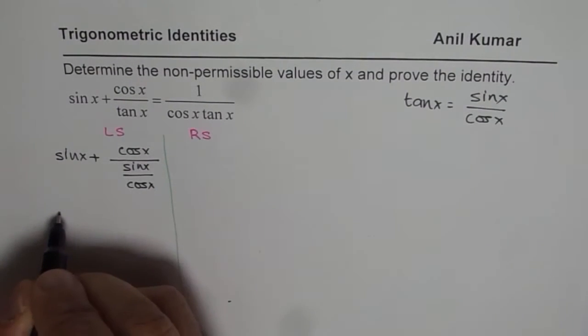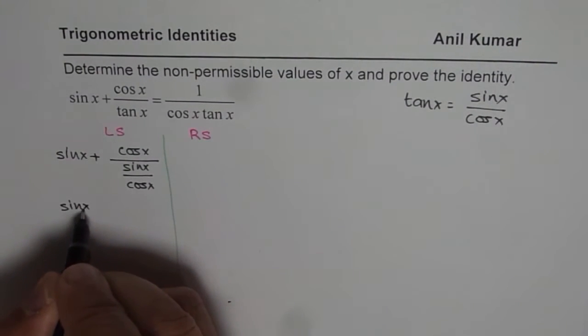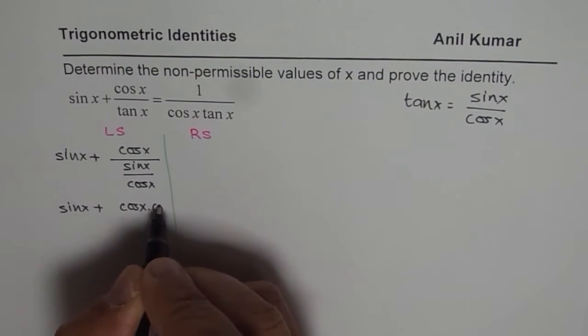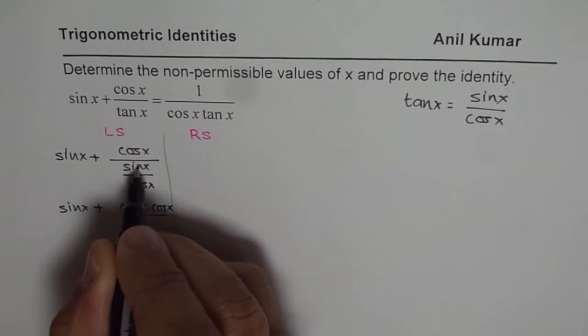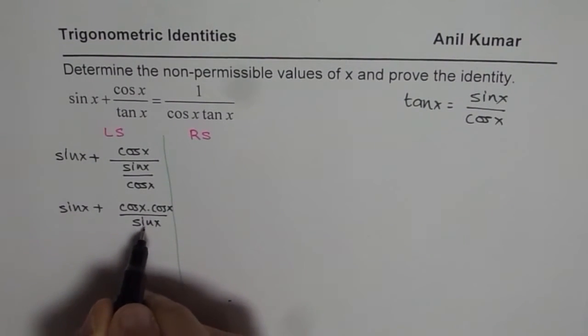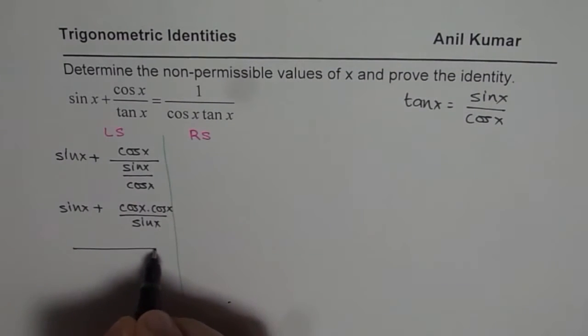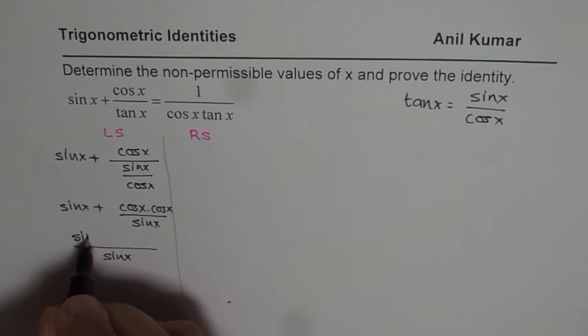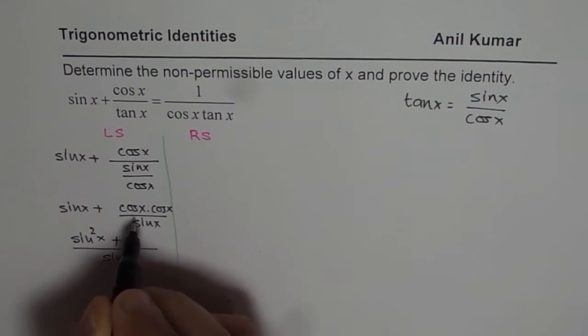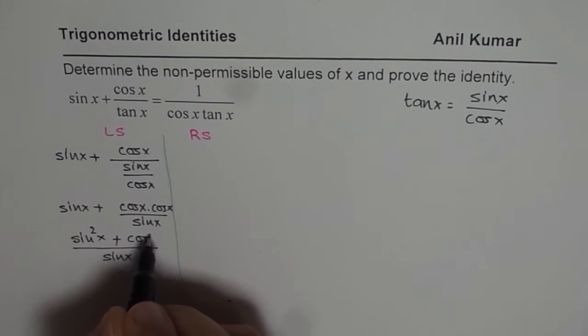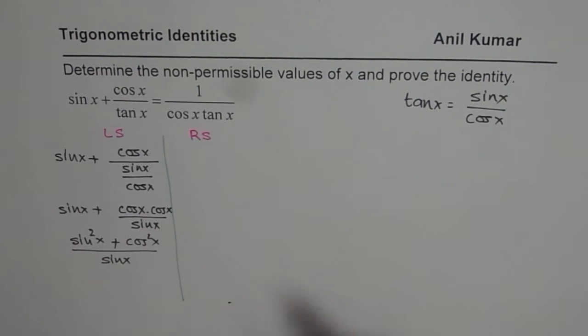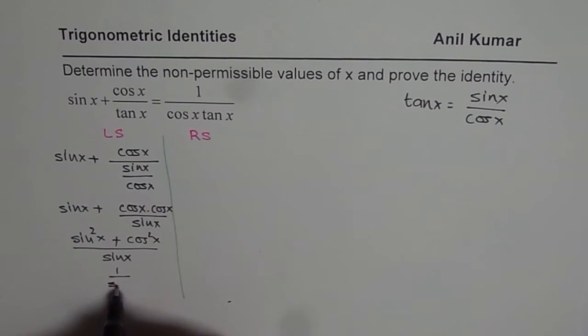So we can write this as sin x plus cos x times cos x over sin x. So sin x is common denominator. To make sin x here, we have to multiply by sin x, so we get sin square x plus cos square x. What is cos square x plus sin square x? It is 1, so on the left side we get 1 over sin x.